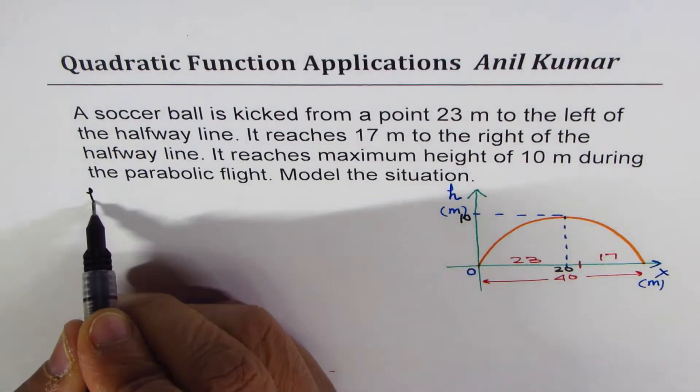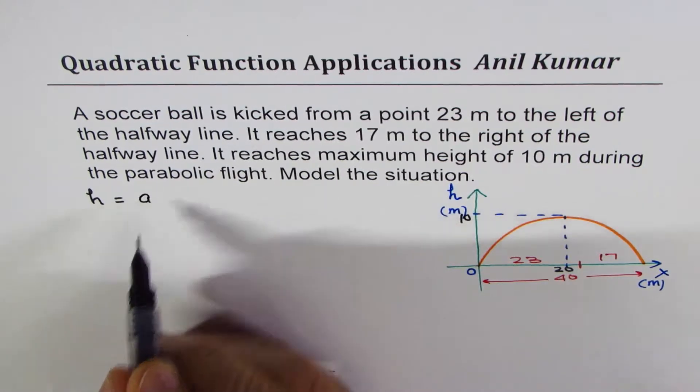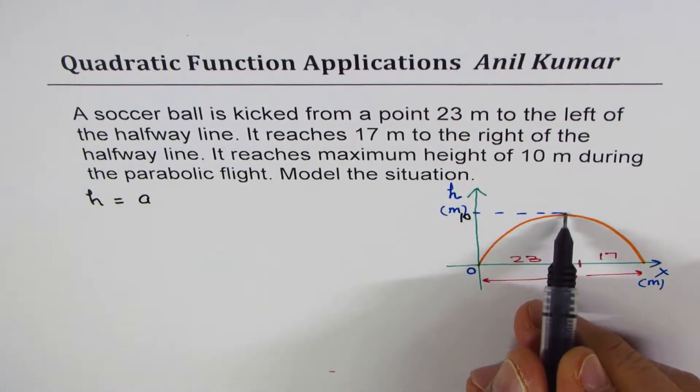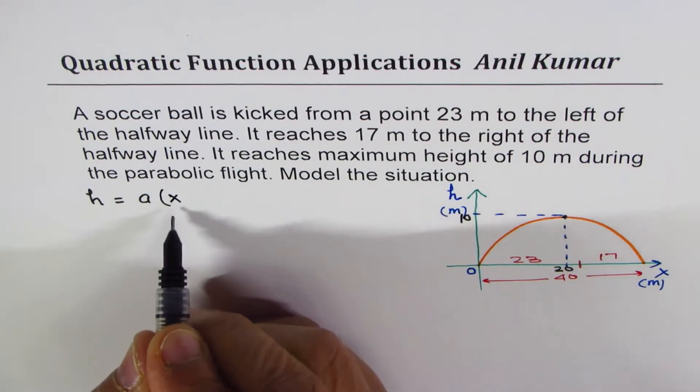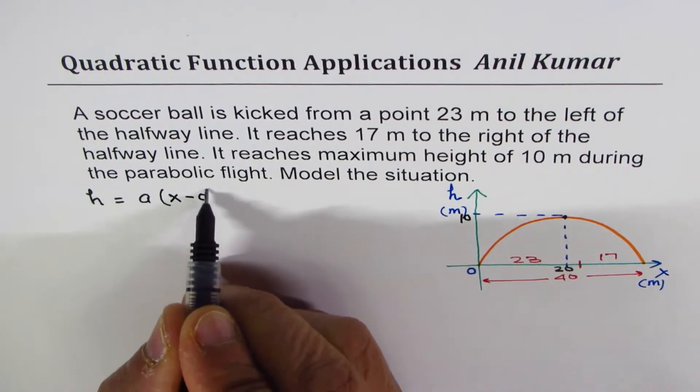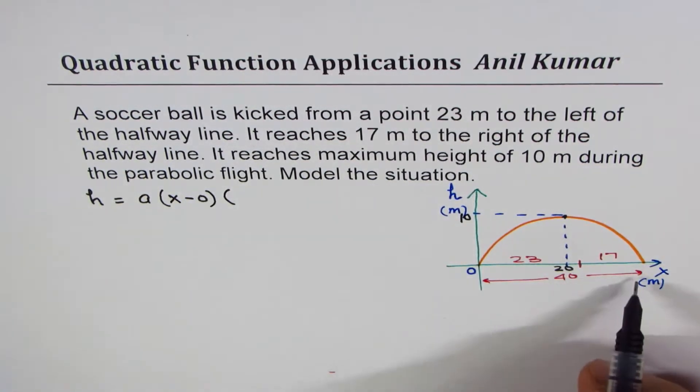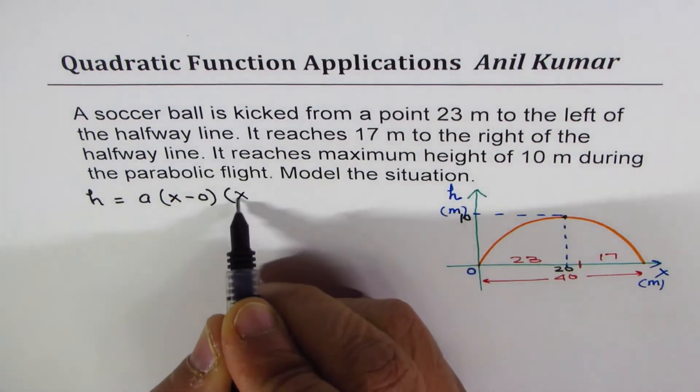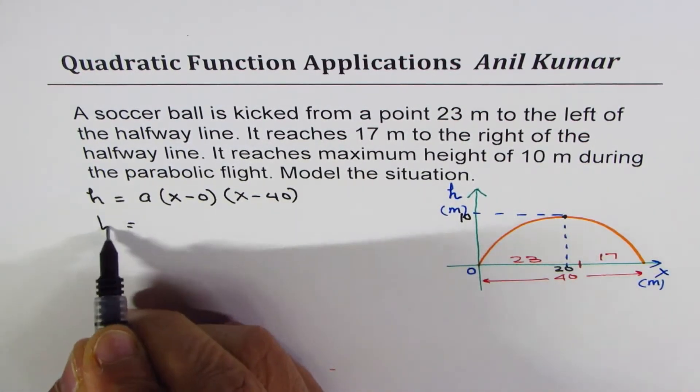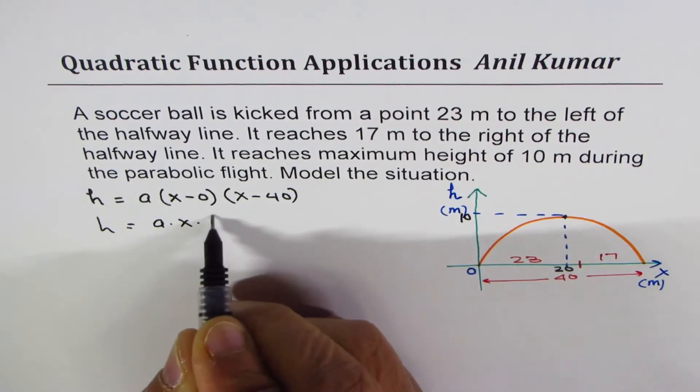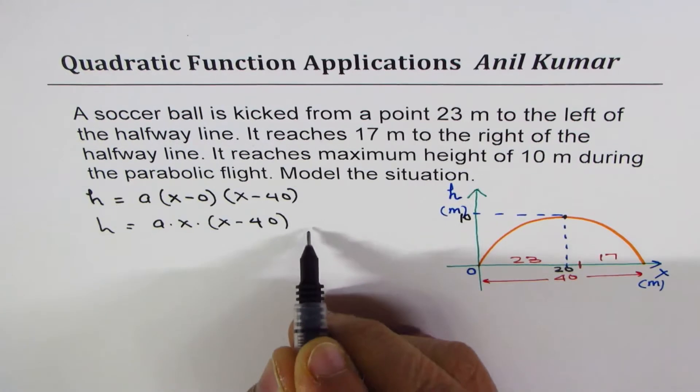So we can write height H as equal to A times, value of A we'll get using this maximum height. First intercept is at zero. You may write X, you may write X minus zero also. The second intercept is at distance of 40, so X minus 40. That is A times X times X minus 40.